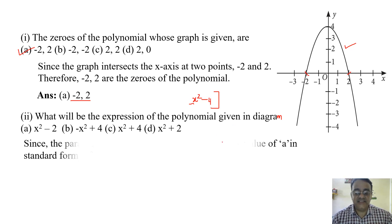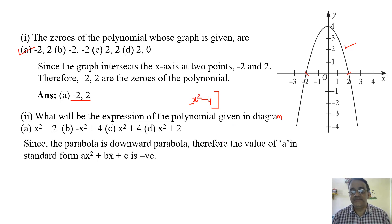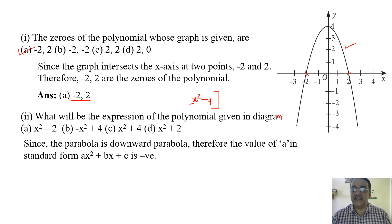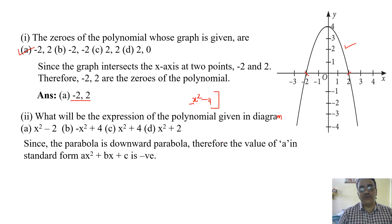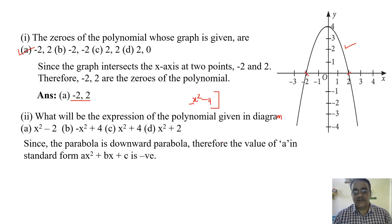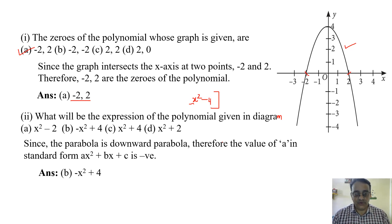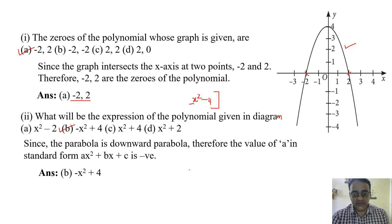Since the parabola is a downward parabola, the coefficient of x squared must be negative. So the value of a in the standard form ax squared plus bx plus c is negative. We got x squared minus 4, so multiplying by minus 1 gives minus x squared plus 4. That is the correct answer, option B.